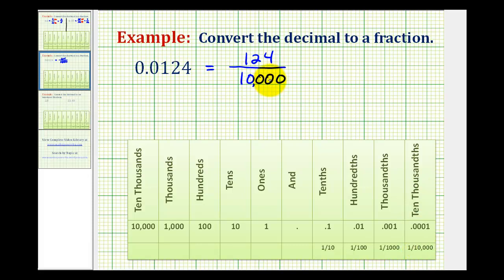But now we do have to simplify this. So we want to simplify out any common factors between 124 and 10,000. And these do both share a common factor of at least 4, so let's start there.